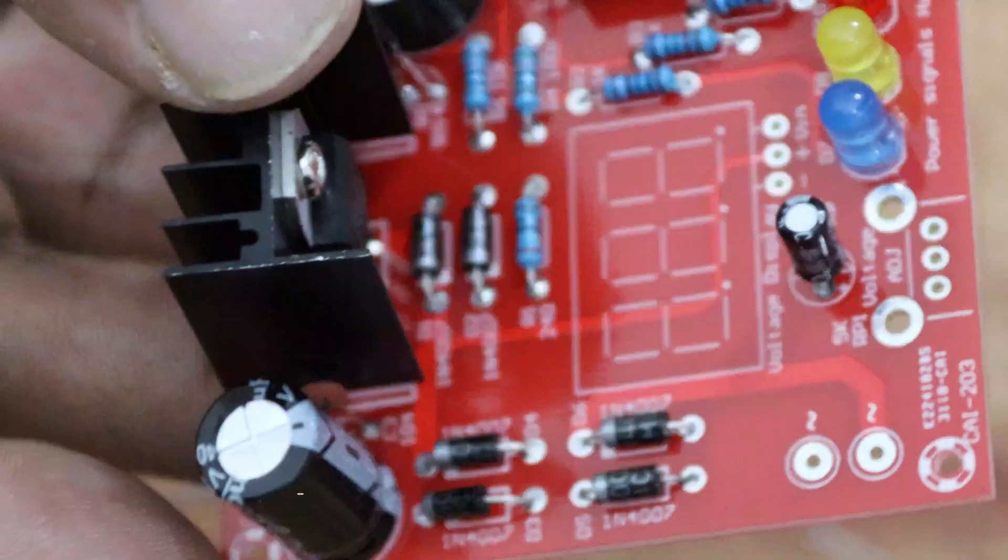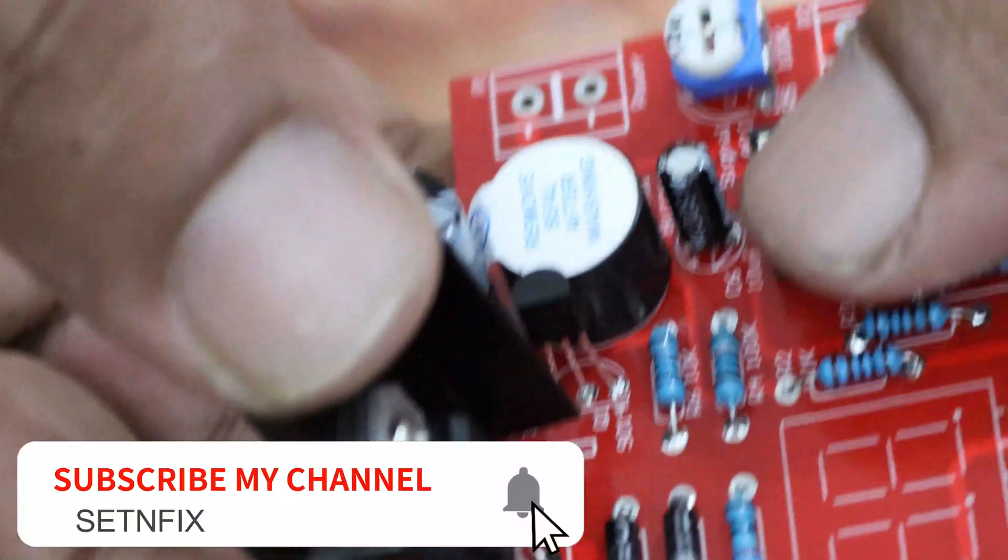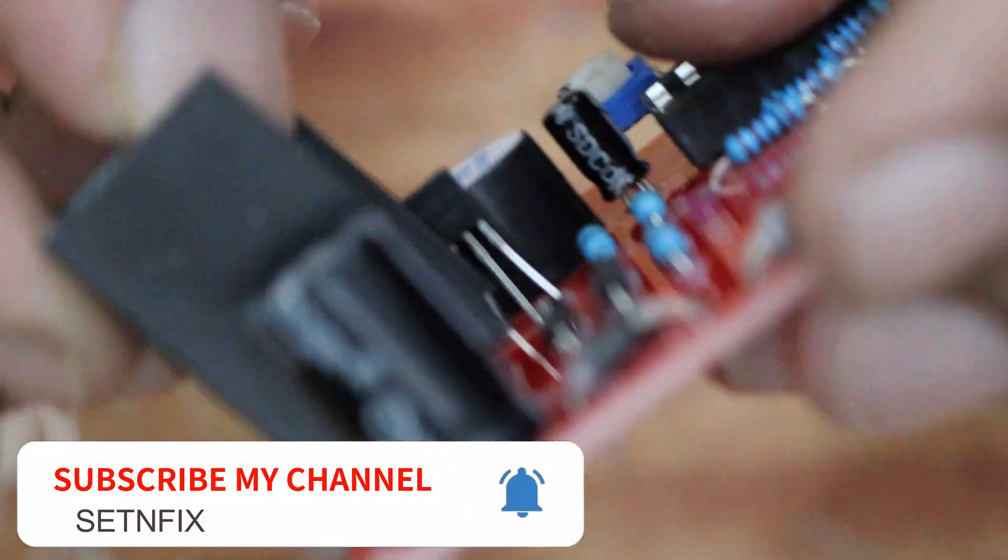This is the main part: the LM312 voltage regulator. Use the given heatsink and fix it with the regulator IC before soldering to the board. Once the voltage regulator is fixed to the heatsink, solder it to the board.